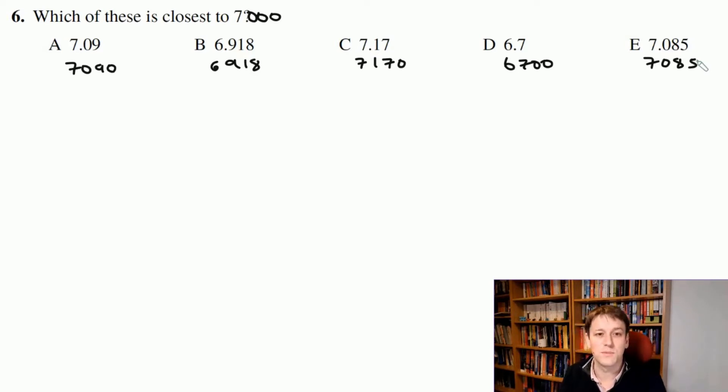You could of course just do the subtractions with decimals, but we have nice whole numbers. So it's now much more obvious. This one is 90 bigger than 7,000. This one we can see is 82 smaller, this one is 170 bigger, this one is 300 smaller, and this one is 85 bigger. So the closest is 6,918 because 6,918 is closest to 7,000.